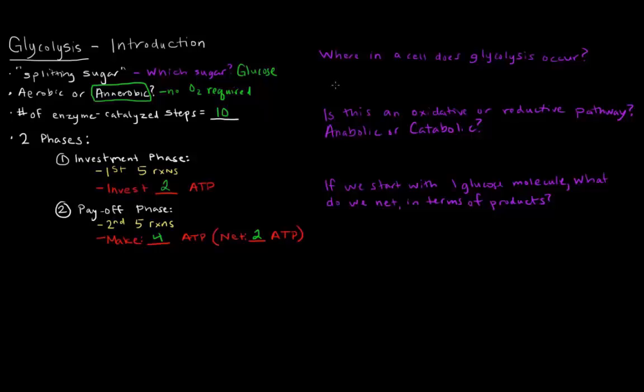We have to keep in mind, where in a cell does glycolysis occur? Glycolysis occurs in the cytosol, right over the cytoplasm. So it does not occur in a membrane-bound organelle. Other pathways, it's important to keep in mind where these pathways actually occur. And I'll get to that later, but bear in mind that glycolysis occurs in the cytosol.